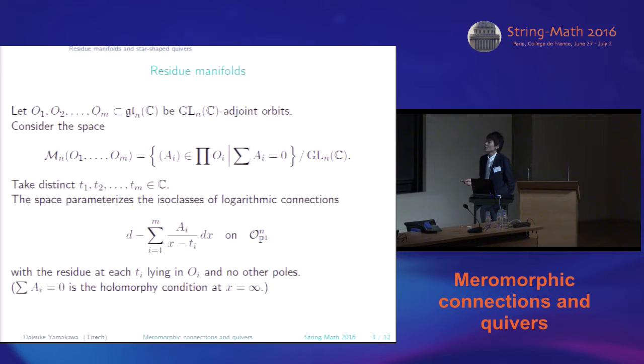Then taking distinct endpoints in C, the space parameterizes the isomorphism classes of logarithmic connections on the trivial vector bundle in the Riemann sphere with the residue at each Ti lying in Oi and no other poles. Note that the condition sum equal to zero is nothing but the holomorphic condition at x equal to infinity. So this connection is holomorphic at infinity, it has no other poles.